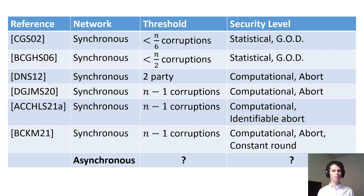However, all of these protocols have been in the synchronous network model. Even in the classical setting, real-world networks cannot guarantee synchrony. Since quantum networks are more general than classical ones, we can't expect to solve this problem when we eventually construct real-world quantum networks. This leaves open the problem of constructing secure multiparty quantum computation in asynchronous networks.